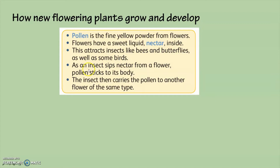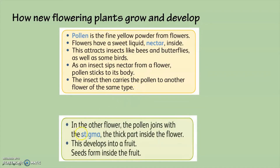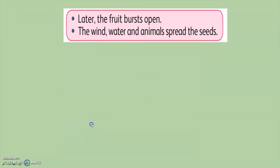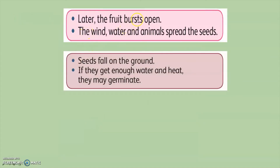As an insect sips nectar from a flower, pollen sticks to its body. The insect then carries the pollen to another flower of the same type. In the other flower, the pollen joins with the stigma — the thick part inside the flower. This develops into fruits, with seeds inside the fruits.